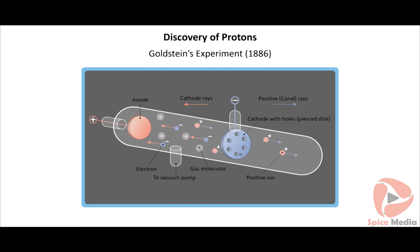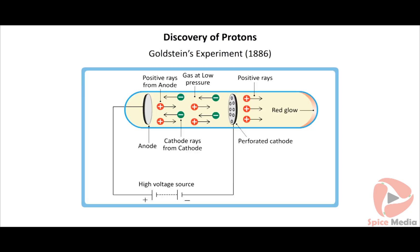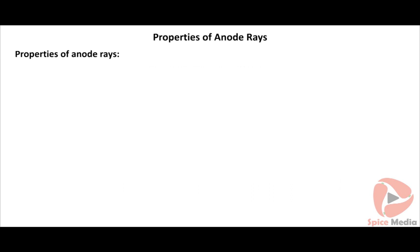Goldstein repeated the cathode ray experiment using a perforated cathode. Applying a high voltage under low pressure, he observed a faint red glow on the wall behind the cathode. Since these rays originated from the anode, they were called anode rays, canal rays, or positive rays — found to be a stream of positively charged particles. When hydrogen gas was used, the positively charged particles obtained are called protons. Each proton is produced when one electron is removed from one hydrogen atom: H → H⁺ + e⁻. Thus a proton can be defined as a hydrogen ion.